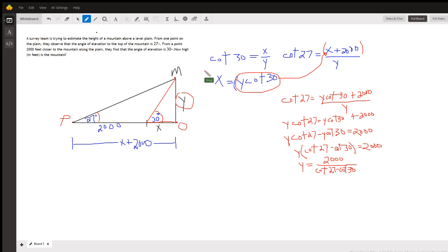Now I can solve this first equation for x by multiplying both sides by y, so x equals y times the cotangent of 30.